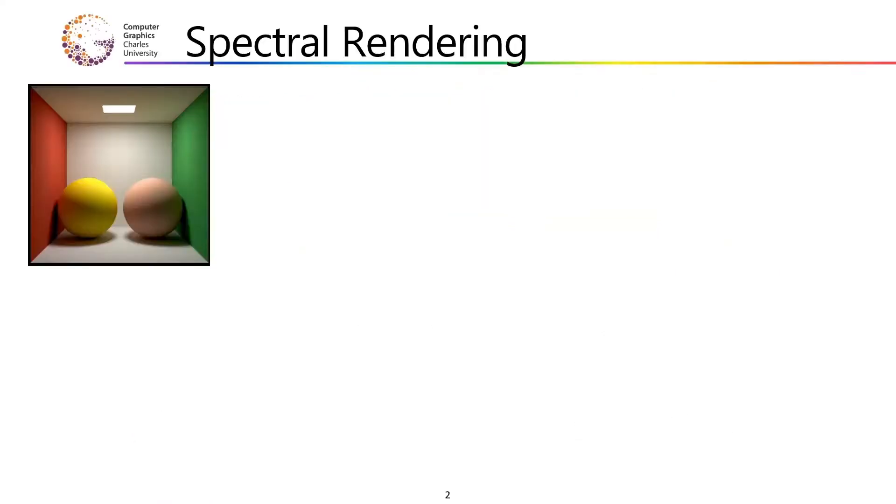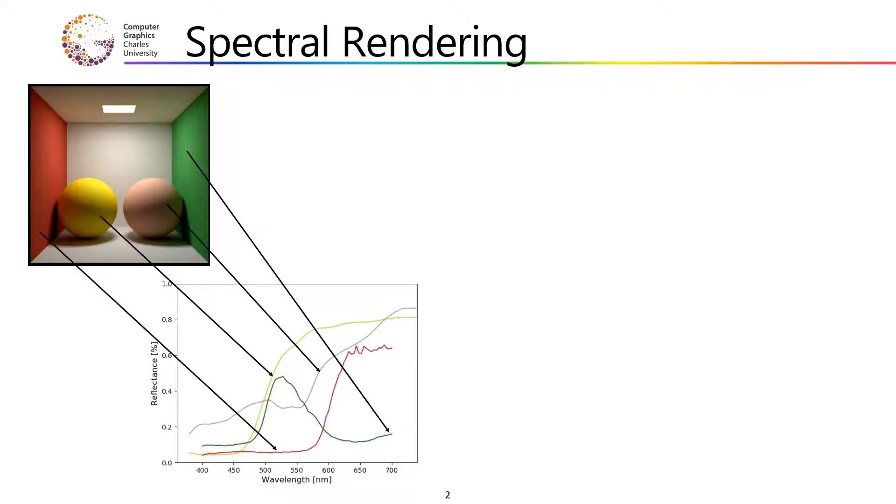To start off, let me take a step back and give a bit of theoretical background to spectral rendering and subsequently to spectral uplifting. In order to simulate light transport in a physically accurate fashion, a renderer must internally represent colors as they are in nature, which is a spectral distribution.